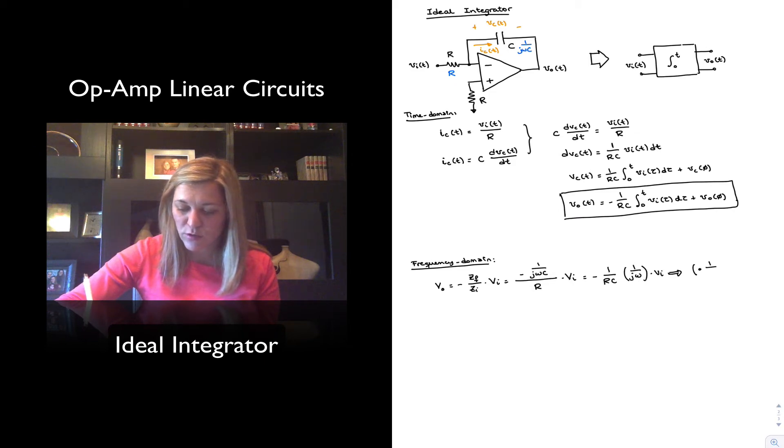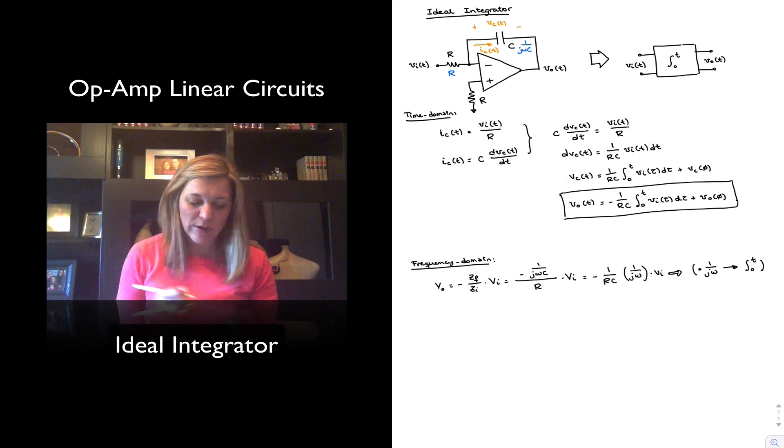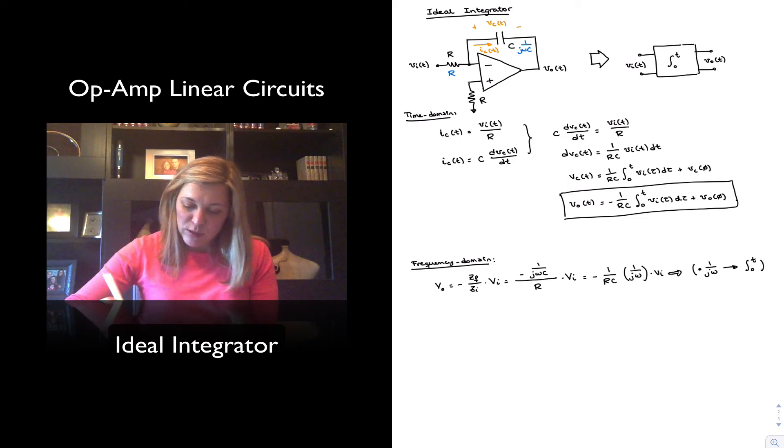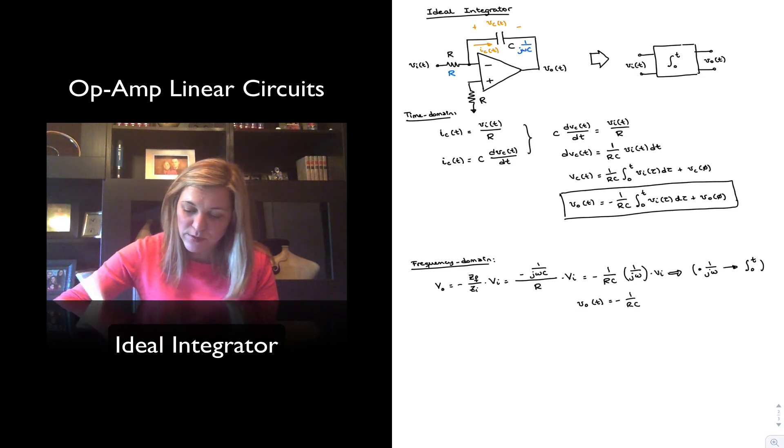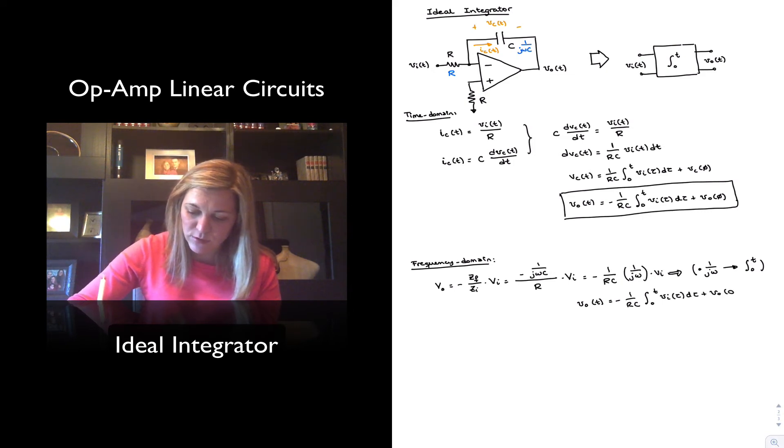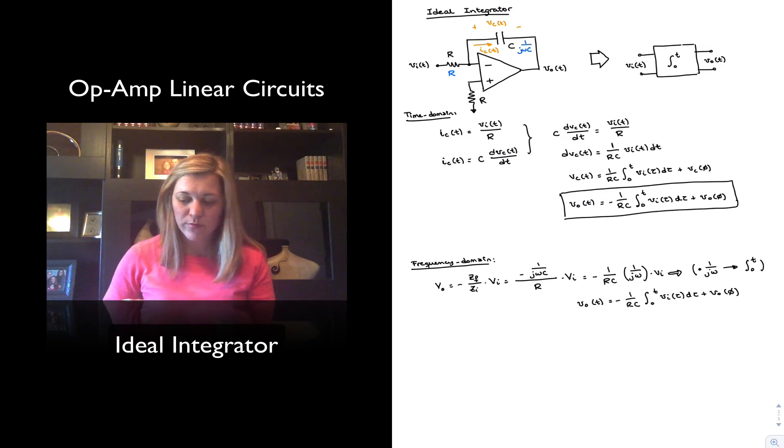And so multiplication times one over j omega or division by j omega in the frequency domain translates as an integral in the time domain. So I call from that expression Vout equals minus one over RC times one over j omega times phasor Vin. I could also solve for Vout as a function of time and I will obtain the same expression as above minus one over RC integral from zero to t of Vi of tau d tau plus Vout initial voltage.